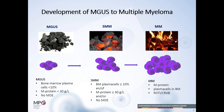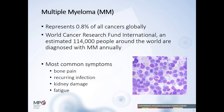MGUS is a situation with a low percentage of plasma cells in the bone marrow, low M protein, and no myeloma defining events. In smouldering myeloma the clone is already larger, giving a higher M protein but still no myeloma defining events. In multiple myeloma there is an M protein, plasma cells in the bone marrow, and importantly, myeloma defining events. Globally, 0.8% of all cancers are myeloma, with around 140,000 people diagnosed each year. Problems include bone pain, recurrent infection, kidney damage, and fatigue.